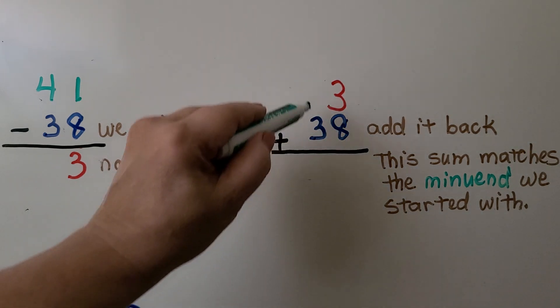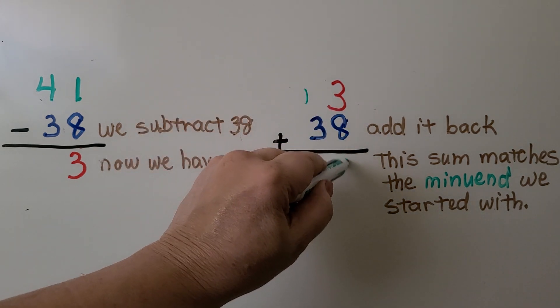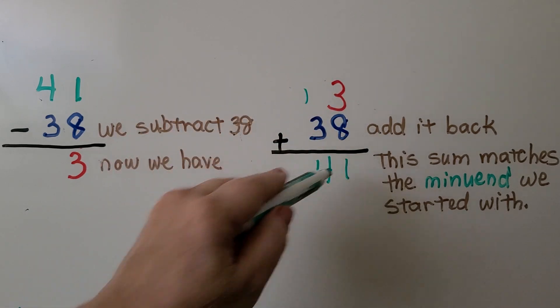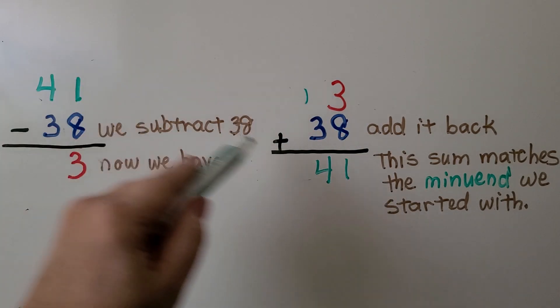We can add the 38 back to this 3, and the sum should match the minuend. 8 plus 3 is 11. We regroup a 10 and put a 1 in the ones place. 3 plus 1 is 4. And look, it does match the minuend.